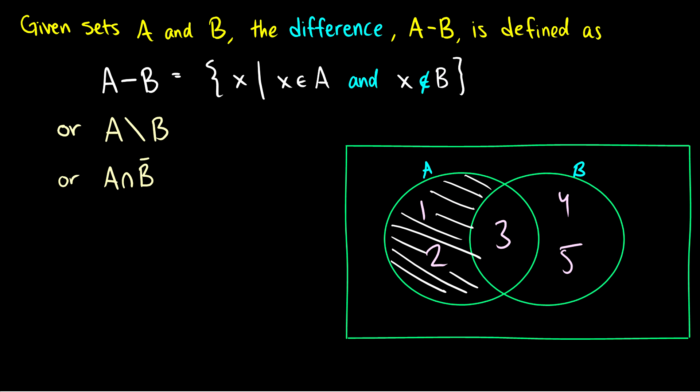In this case even though 1, 2, 3 was in A, B contains 3 and we don't want 3 in there. So A minus B would just be the set containing 1 and 2.